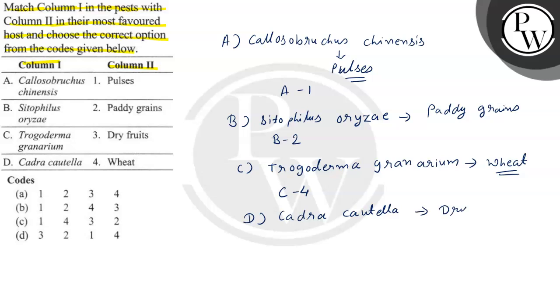So here we have matched these pests and hosts. A will be 1, B will be 2 paddy grains, C will be 4 wheat, and D will be 3 dry fruits. So our correct answer will be B.